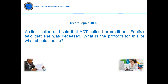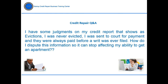A client called and said ADT pulled her credit and Equifax said she was deceased. What is the protocol? This appears to be inaccurate reporting. Use the hybrid campaign and indicate that the reporting is incorrect — your client's personal information is wrong and she is not deceased. Send proof that your client is alive: a current utility bill along with ID and Social Security number, and ask the credit bureaus to delete the inaccurate personal information.